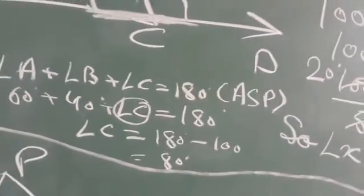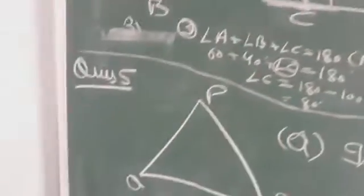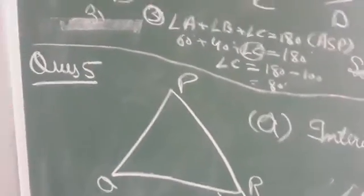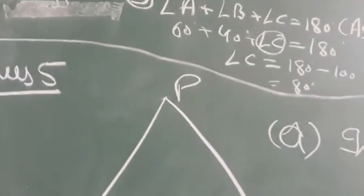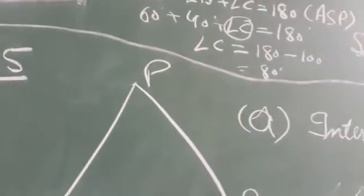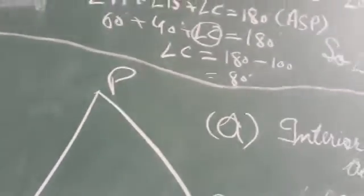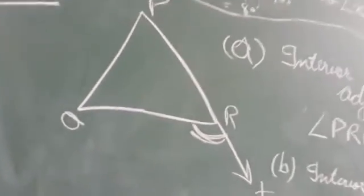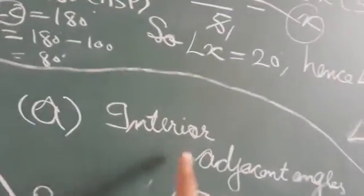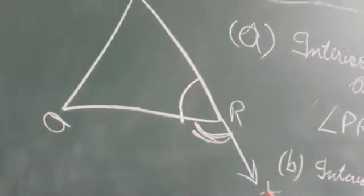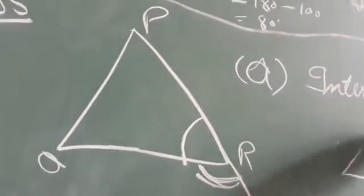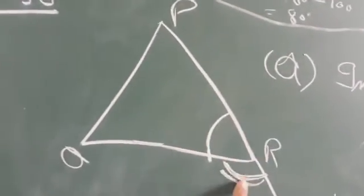अब question number 5 देखिए। इसमें triangle PQR है और हमको angle QRX के बारे में बताना है। QRX के first part में interior adjacent angle - इस angle का adjacent angle कौन सा होगा? Adjacent का मतलब होता है साथ वाला।